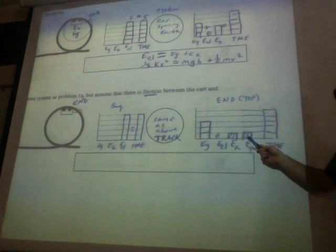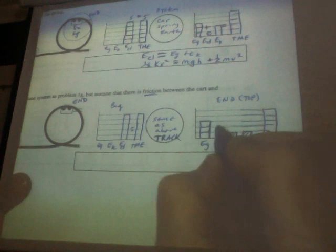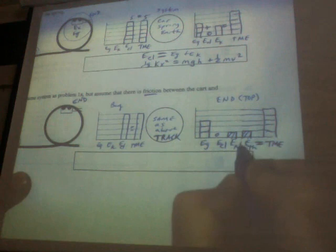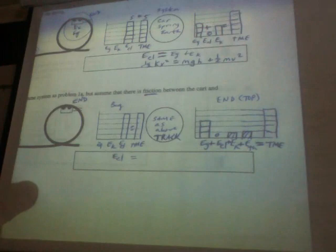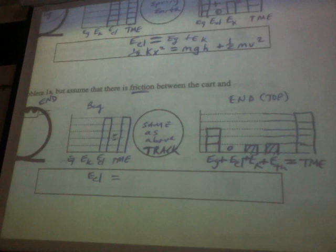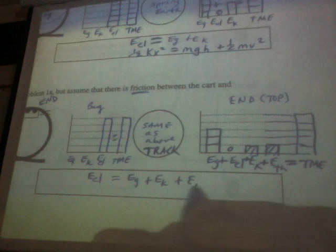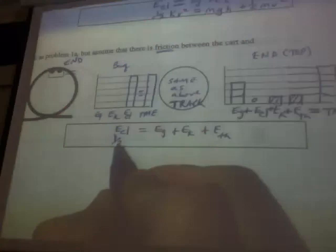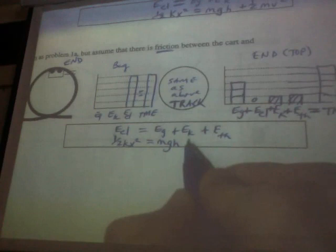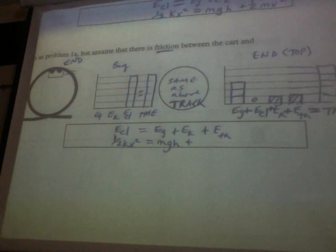So all of those things equal the TME if you put a plus in between everything. And our equation, we've got the E elastic again to start. And what is it equal on the other side? What's in your bars except for the TME part? EG plus EK plus E thermal. Okay. And we can finish it off by replacing with what the calculation kind of piece. One half kx squared. mgh. Now, what's EK equation again? Oh, that's a great question. One half mv squared. Beautiful. Thank you.